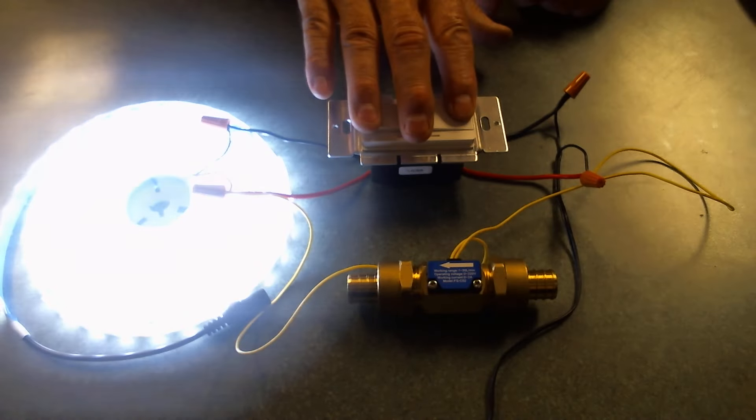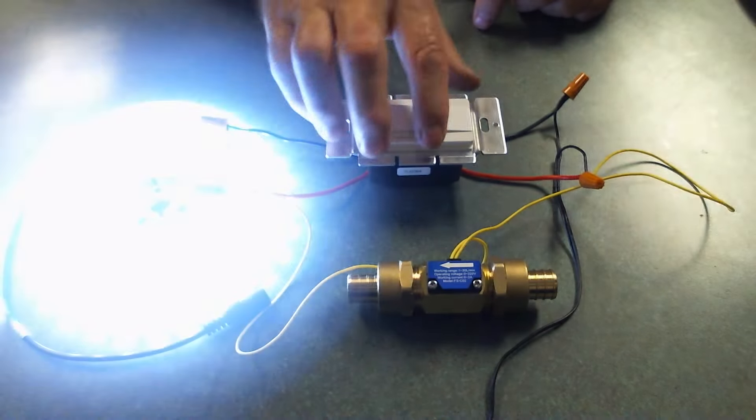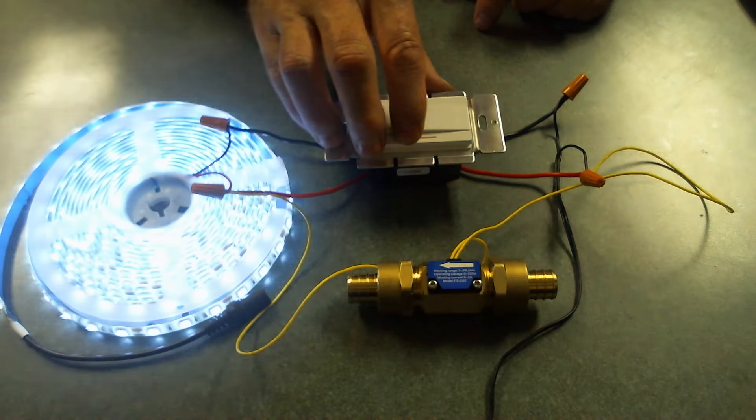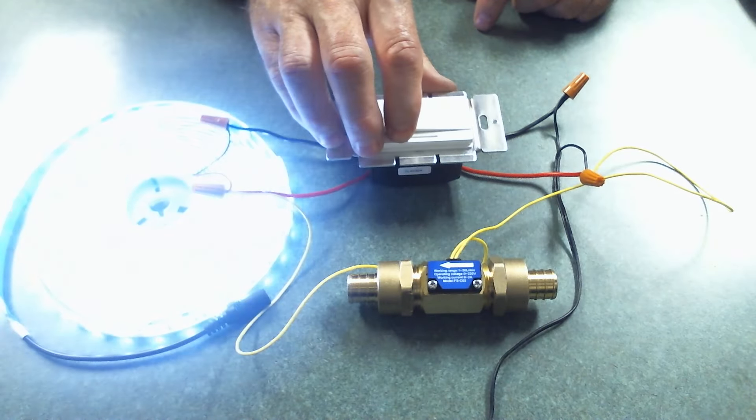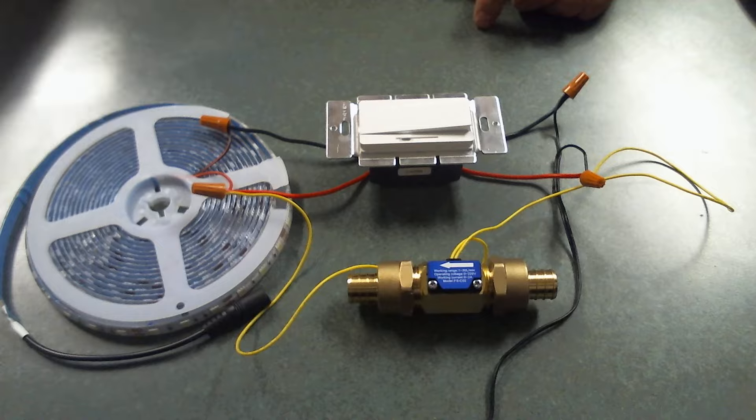We have the switch on and off. We can operate it with the dimmer. Switch is off.